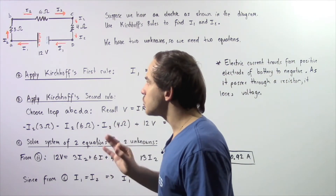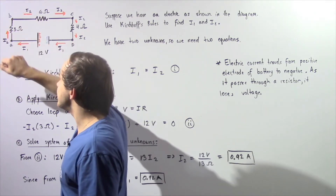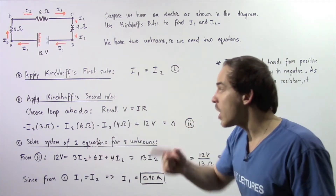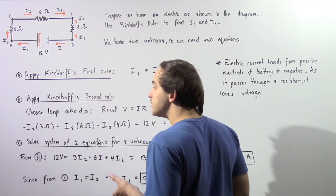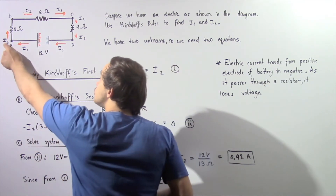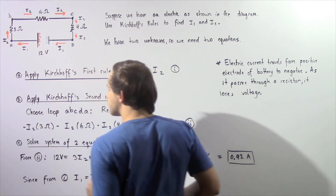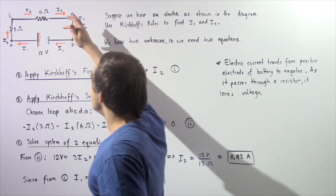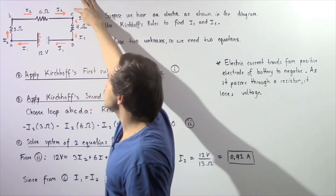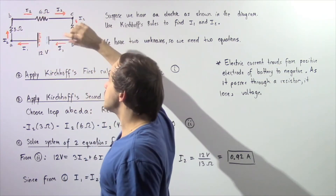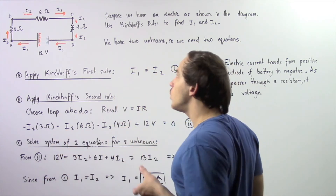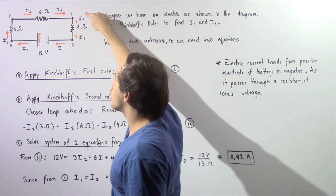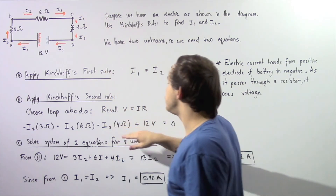As our positive charge travels from A to B, it passes through the 3 Ohm resistor. Because it's traveling from positive to negative, the voltage drops, so we have negative I2 times 3 Ohms. Traveling from B to C, it passes through the 6 Ohm resistor: negative I2 times 6 Ohms. From C to D, we again have current I2: negative I2 times 4 Ohms.